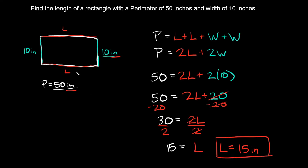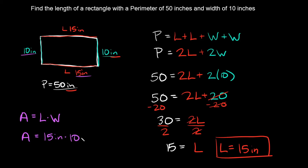So L is 15 inches on the bottom and 15 inches on the top. Now let's find the area. The area of a square or rectangle is equal to the length times the width. So the area is gonna be the length, which is 15 inches, multiplied by the width, which is 10 inches. 15 times 10 is 150 — a quick way to multiply by 10 is just tack on the 0. Inches times inches is inches squared, so the area is equal to 150 inches squared.